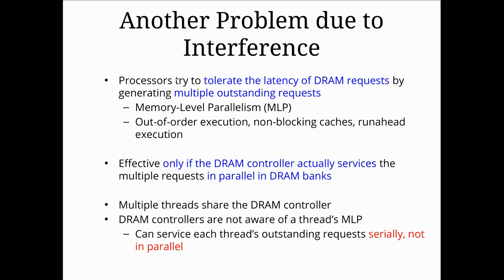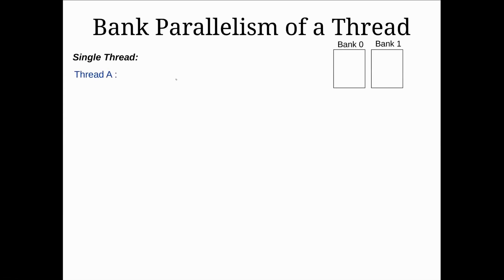Generally, unless we only have one or two threads, multiple threads are going to be sharing the same DRAM controller. DRAM controllers are not yet aware of the memory level parallelism that we actually have. So what we're going to see is that we have to service each thread's outstanding requests serially and not in parallel, because there's no real understanding of the threaded nature of these requests. Let's take a look at what this looks like.